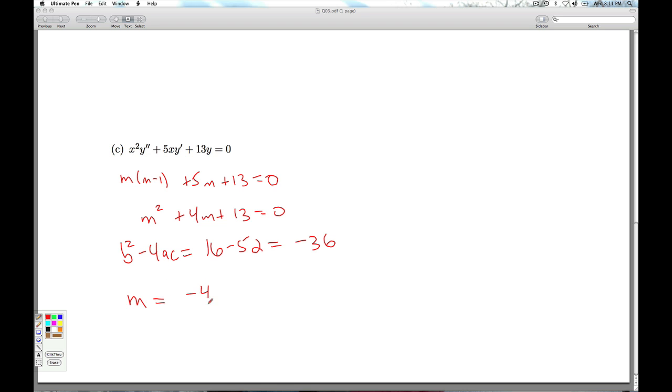So I get m is negative 4 plus or minus the square root of 36, which is 6i, all divided by 2. So I get negative 2 plus or minus 3i. And so you're looking at things like x to the minus 2 plus 3i, x to the minus 2 minus 3i. Once again, how do we handle that?